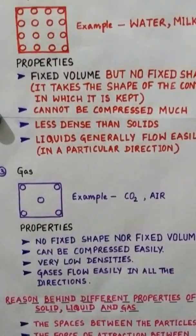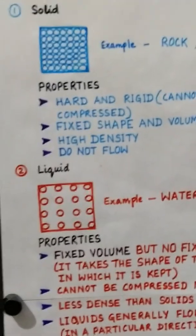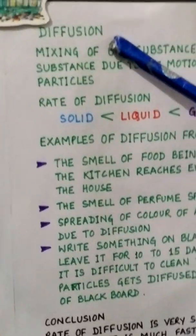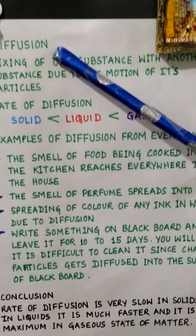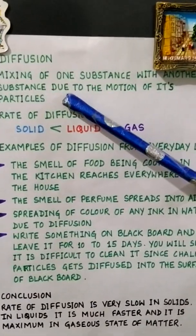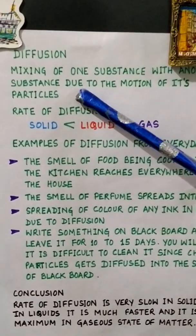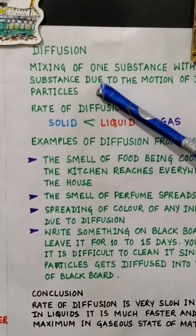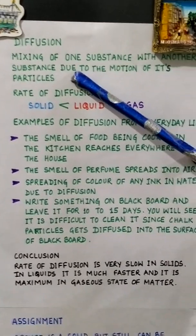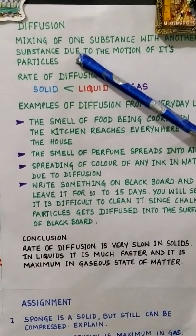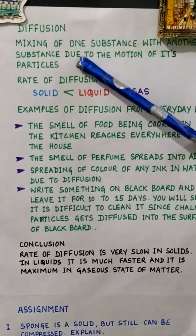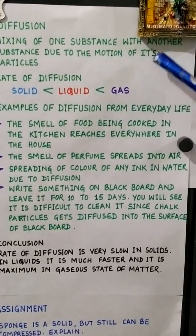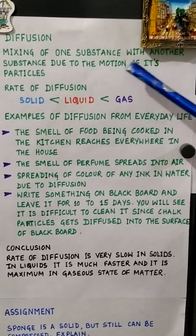One more property we will discuss today is diffusion. Diffusion is the intermixing of particles from one substance to another. Let us take the example of an incense stick kept in one corner of a room whose fragrance spreads throughout the room. This is because incense stick particles move continuously and mix with air particles. This is what we call diffusion.